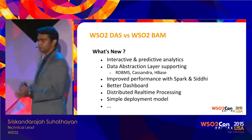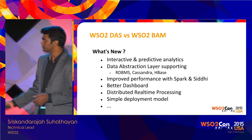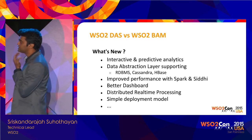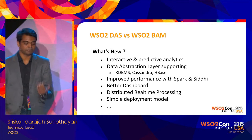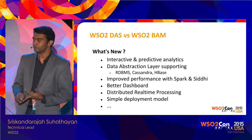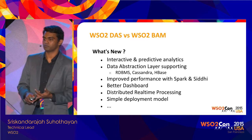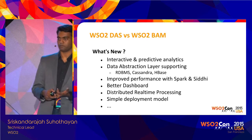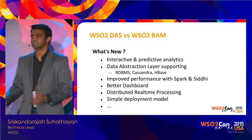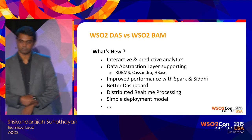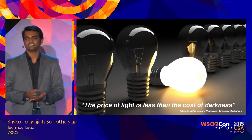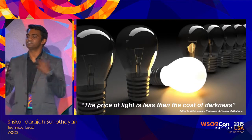I've received many questions about what's new compared to BAM. Apart from BAM, the new features include interactive and predictive analysis, a common data abstraction layer, improved performance with Spark and Siddhi, a better dashboard than before, distributed real-time processing support on top of Apache Storm — which we didn't have previously — and much simpler deployment models. Earlier with Hadoop we couldn't do small deployments; now it's much easier to start small and scale based on requirements. As a closing thought: the price of light is less than the cost of darkness — invest in analytics, which gives you a lot more in return.